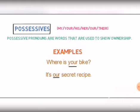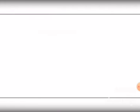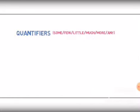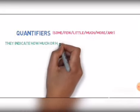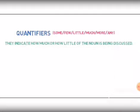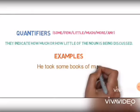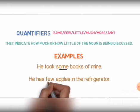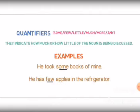Let's look into the last category of determiners, which is quantifiers. Quantifiers are words like some, few, little, much, more, any. They indicate how much or how little of the noun is being used. For example, 'He took some books of mine.' Here 'some' defines the quantity of books he took. Another example: 'He has few apples in the refrigerator.' Here 'few' defines the quantity of apples he has. As quantifiers determine the quantity of a noun, they come in the category of determiners.